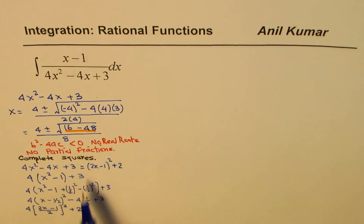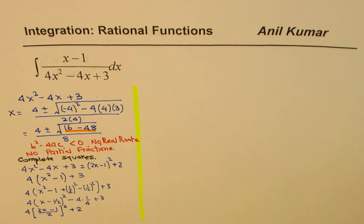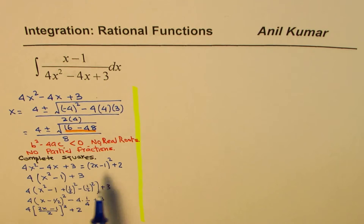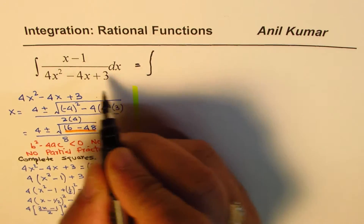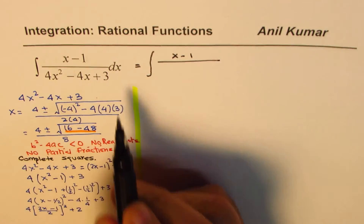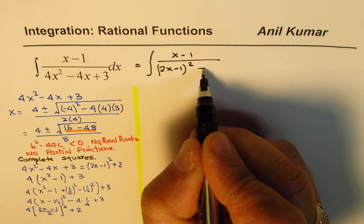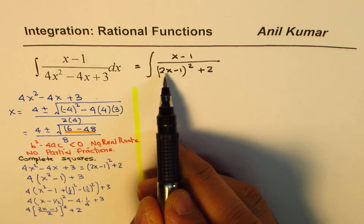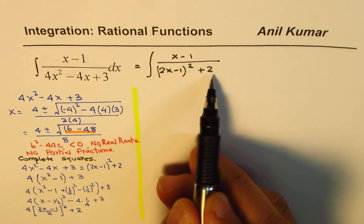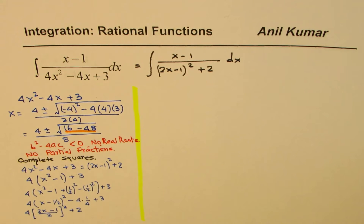This is the completing the square — we get the vertex form of the quadratic. We can verify by expanding: 4x squared from the first term, minus 4x from the cross term, and 1 plus 2 equals 3, so the original quadratic checks out. So the denominator is exactly equal to the quantity 2x minus 1 squared plus 2, and our integral has this in the denominator.